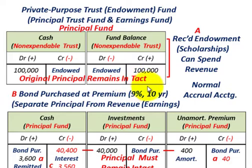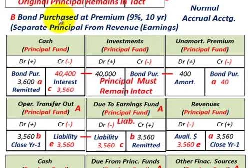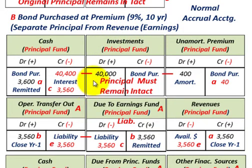Now let's look at a more complicated example of how this private purpose trust really works. Non-expendable trust funds use normal accrual accounting. We're going to look at a bond purchased at a premium: a 9%, 10-year bond purchased by the governmental unit and set up as a private purpose trust and endowment. The revenues generated off this bond can be used for scholarships. The key point is to separate the principal amount from the revenues or earnings.